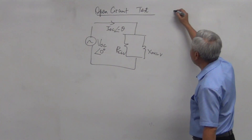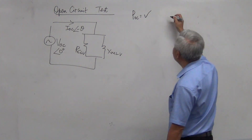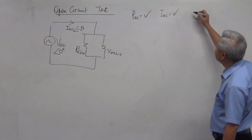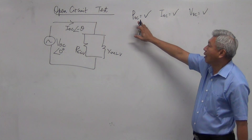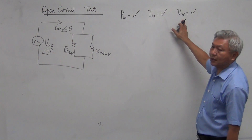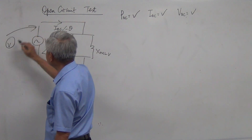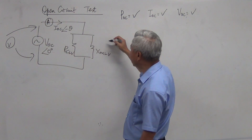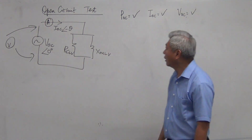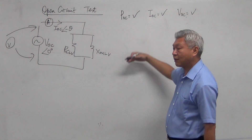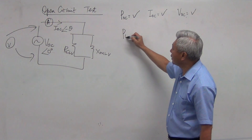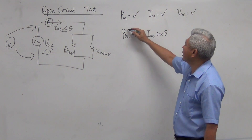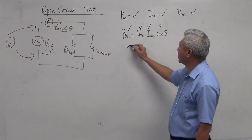Let's talk about the experiment itself. We have obtained the wattmeter reading, the ammeter reading, and the voltmeter reading — three meters: wattmeter, ammeter, voltmeter. The voltmeter is connected in parallel, the ammeter in series, and the wattmeter connected accordingly. The first step: use P equal to VOC times IOC times cosine theta. You have the power reading, the voltage reading, and the current reading — so cosine theta can be found.